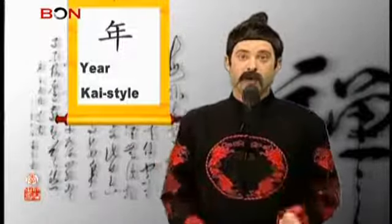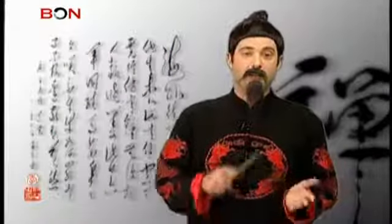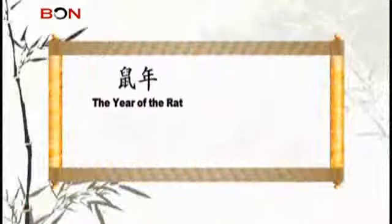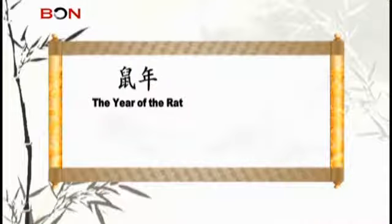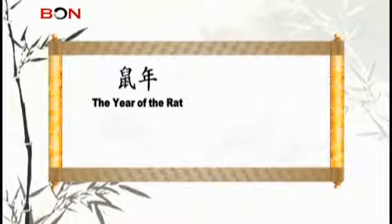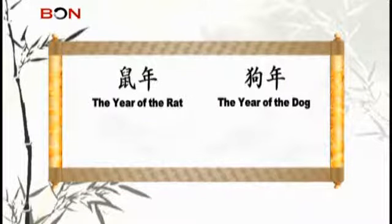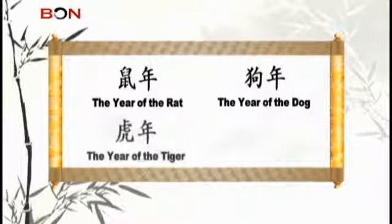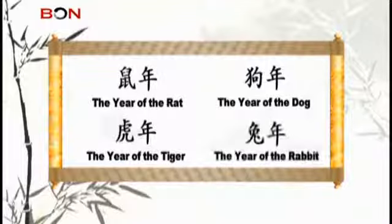If you want to say what year it is according to the Chinese zodiac, like year of the rat, you just take the name of the animal and put year after it. So year of the rat would be shu nian, literally rat year. This applies for all the other animals. Year of the dog would be gou nian. 2010, the year of the tiger, would be hu nian. And 2011, the year of the rabbit, would be tu nian, and so on and so forth.